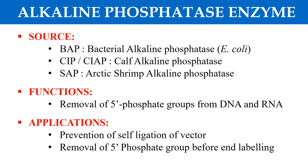In the case of labelling, when you are labelling your primer, you can remove the phosphate group before end-labelling. You can also prevent the self-ligation of a vector by removing the phosphate.